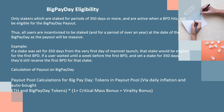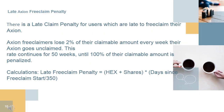Calculation of payout on big payday: Payout pool calculations include tokens in the payout pool via daily inflation and auto-bought ETH, plus big payday tokens, multiplied by 1 plus the critical mass bonus plus the virality bonus. Late Axion free claim penalty: There is a late claim penalty for users who are late to free claim their Axion. Axion free claimers lose 2% of their claimable amount every week their Axion goes unclaimed. This rate continues for 50 weeks, until 100% of their claimable amount is penalized. The late free claim penalty equals HEX shares multiplied by days since free claim start, divided by 350.